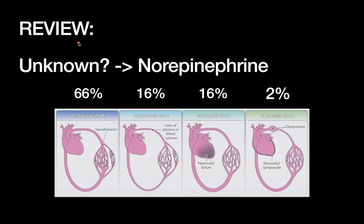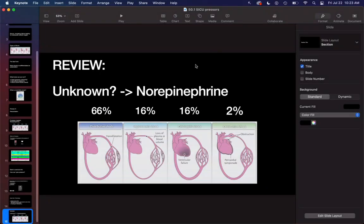To review: for unknown shock, think norepinephrine. When dealing with this scary situation, always first think about resuscitating, and second remember the common causes — distributive and hypovolemic most common, cardiogenic and obstructive much less so — and choose your pressors with that in mind. Norepinephrine is first line for the top two and not wrong in the others. These videos are for educational purposes only and do not constitute medical diagnosis or treatment. See you next time.